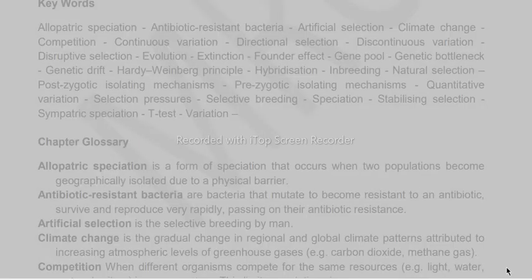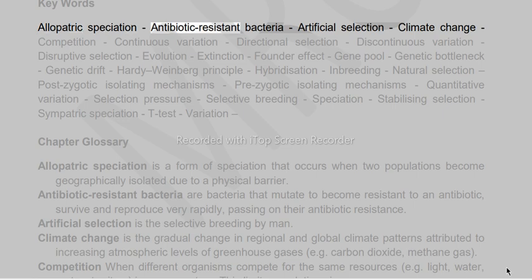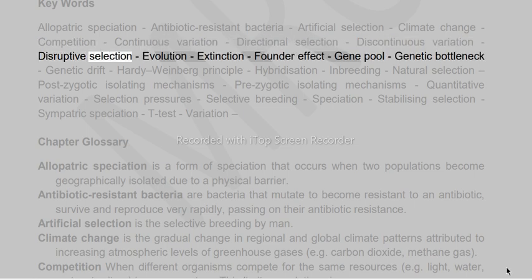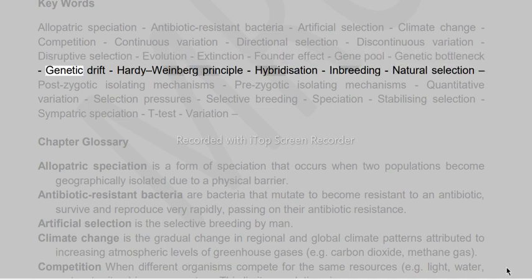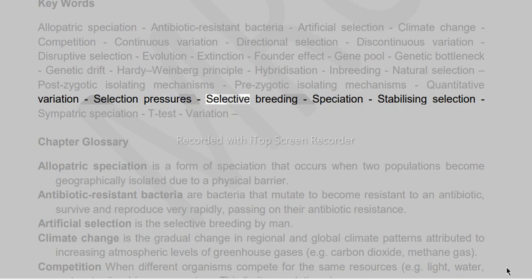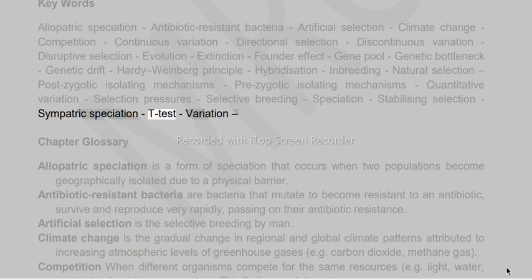Key terms include: allopatric speciation, antibiotic-resistant bacteria, artificial selection, climate change, competition, continuous variation, directional selection, discontinuous variation, disruptive selection, evolution, extinction, founder effect, gene pool, genetic bottleneck, genetic drift, Hardy-Weinberg principle, hybridization, inbreeding, natural selection, post-zygotic isolating mechanisms, pre-zygotic isolating mechanisms, quantitative variation, selection pressures, selective breeding, speciation, stabilizing selection, sympatric speciation, t-test, and variation.